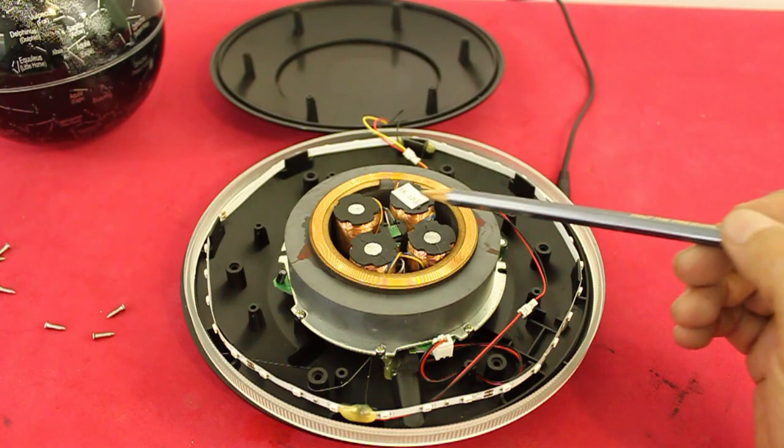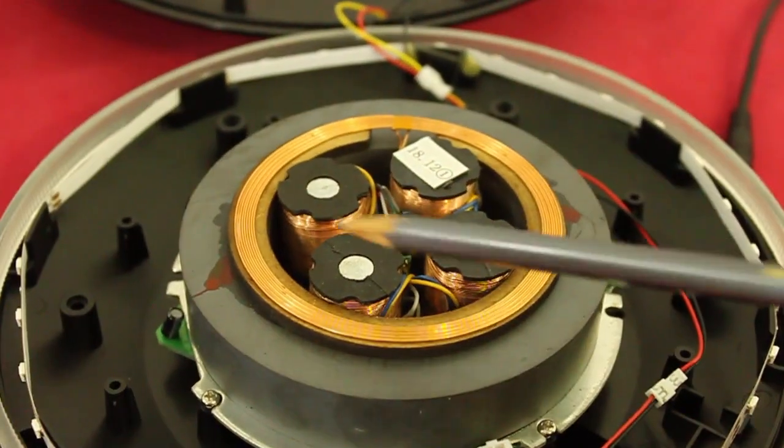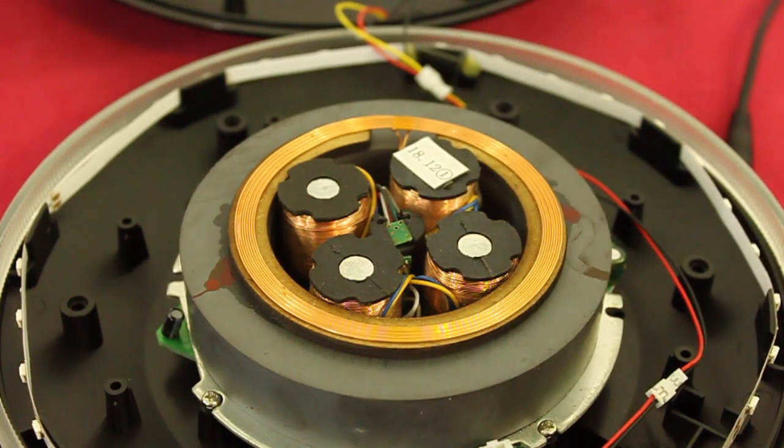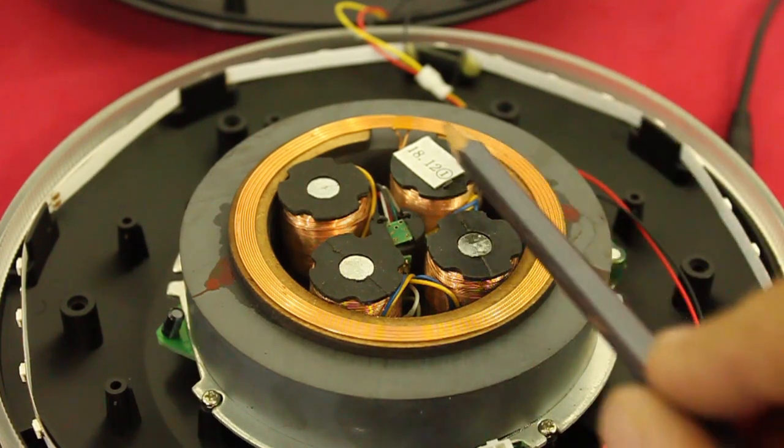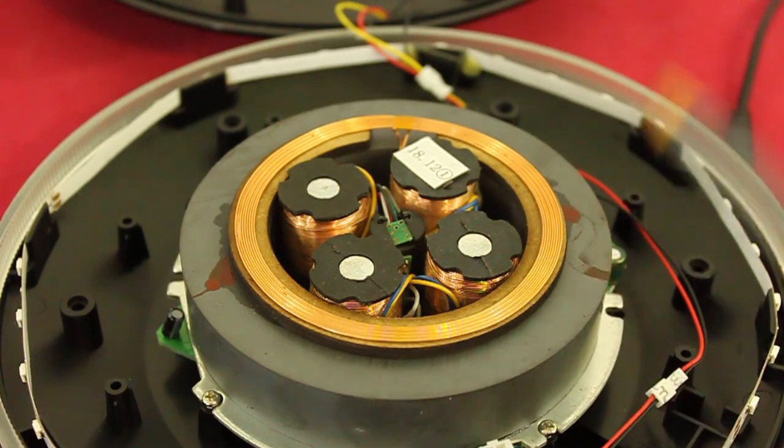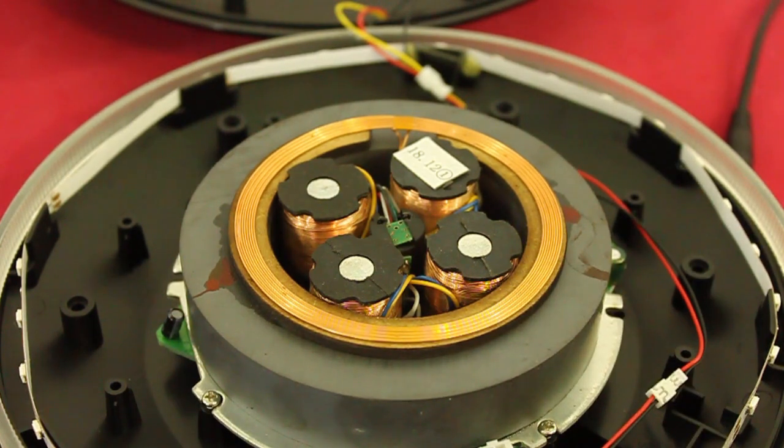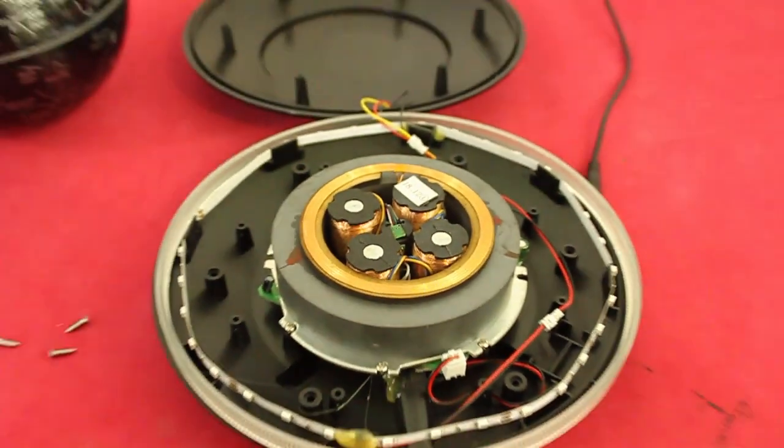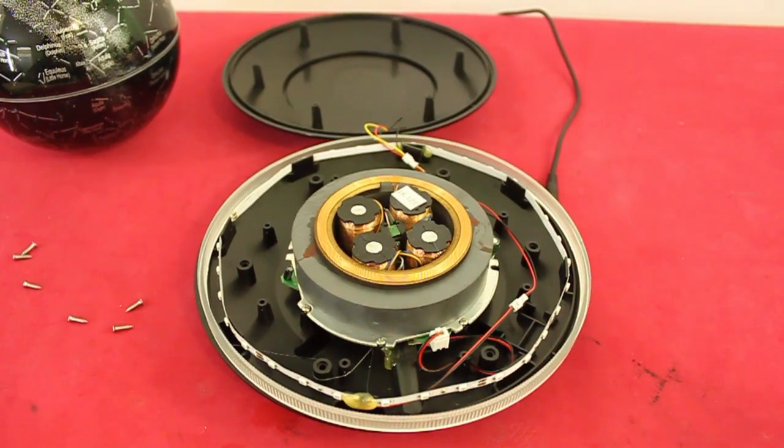And there are four coils here. These coils are for the stabilization of the globe. And also you can see this coil here which is the coil that sends the energy to the globe for the lighting. It works in the same way as the wireless chargers of some cell phones.